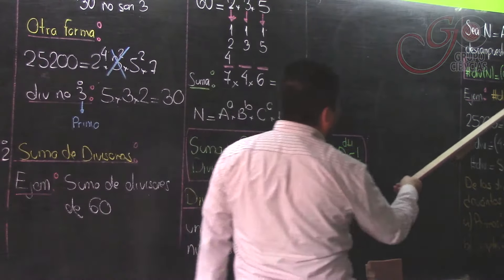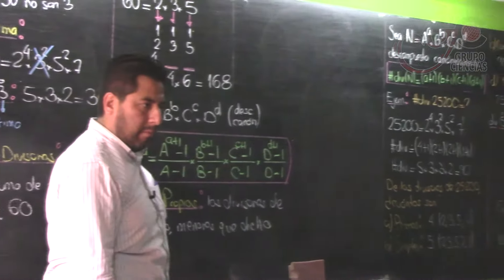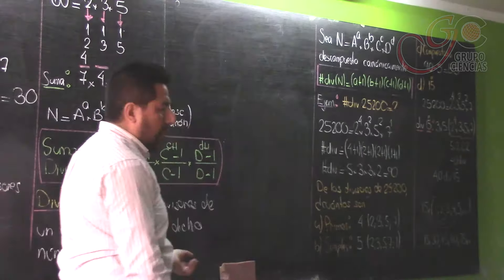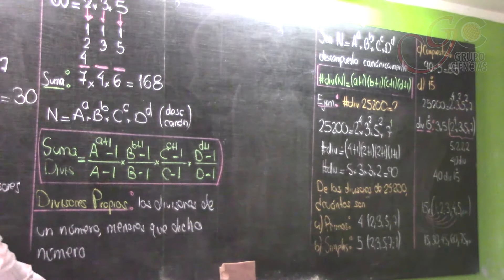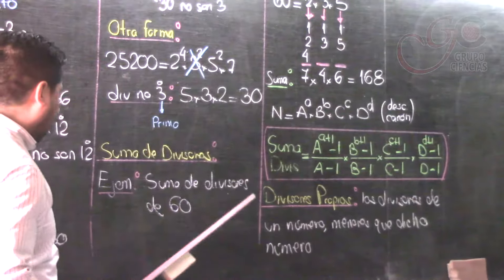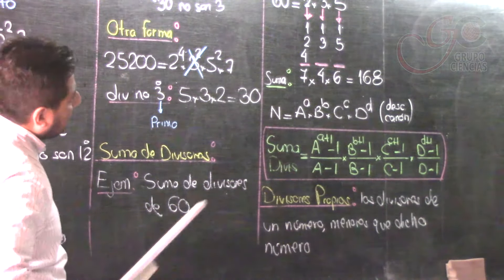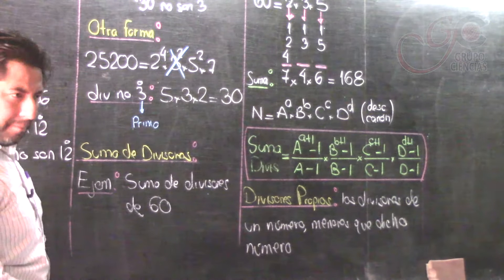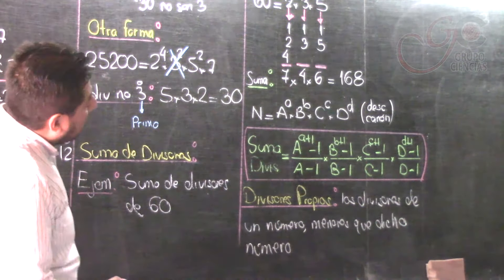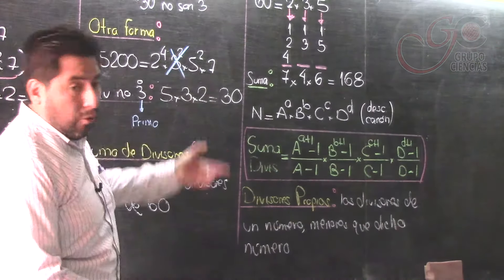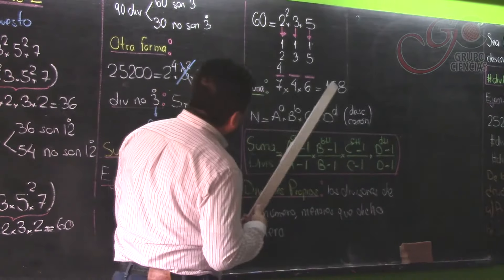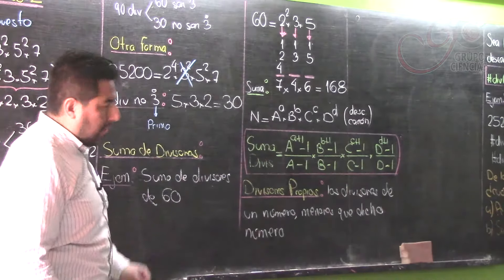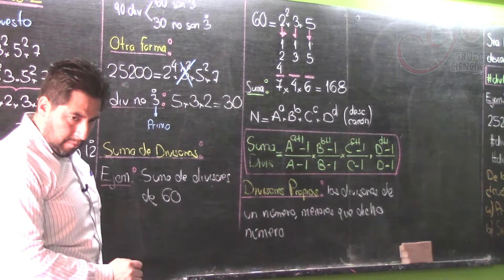¿Cuántos divisores propios tendría 25.200? 89: su total de divisores es 90 menos 1 = 89. ¿Cuántos divisores propios tendría 60? 11, porque hay 12 divisores —3 por 2 por 2— y quitándole uno quedan 11 divisores propios.